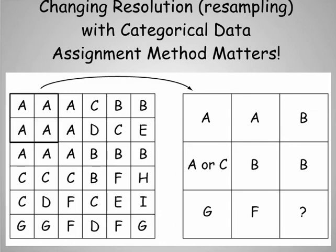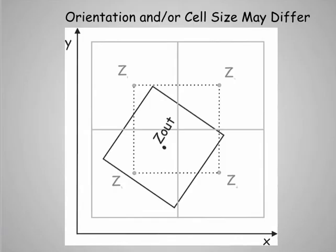The assignment method matters in resampling. Another thing about resampling is the orientation and cell size may differ. So you may have an output cell or point or location that should be influenced more or might be influenced more by one of the input cells. So here this large cell really overlaps very little with the output cell. So I don't want to do just a simple averaging to get the value. I might want to do a distance weighted averaging or an area weighted averaging. There's different ways even for continuous data to get our output values.